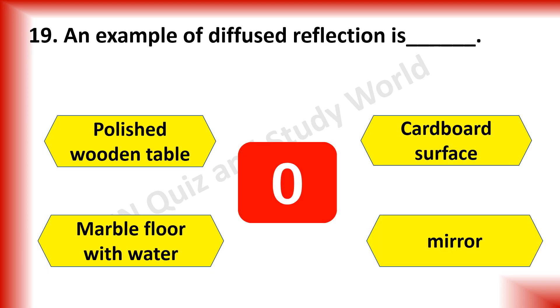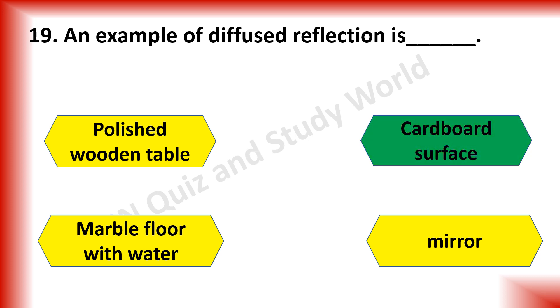An example of diffused reflection is polished wooden table, cardboard surface, marble floor with water or mirror. The answer is cardboard surface.